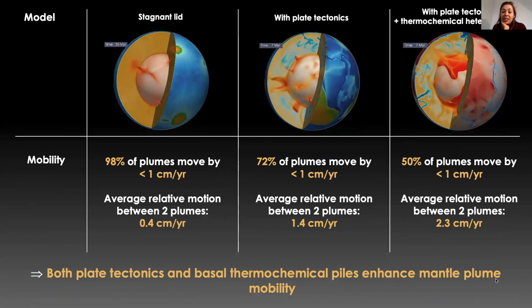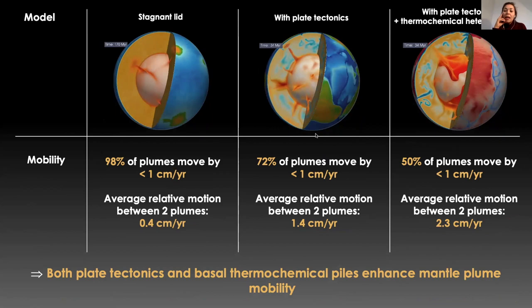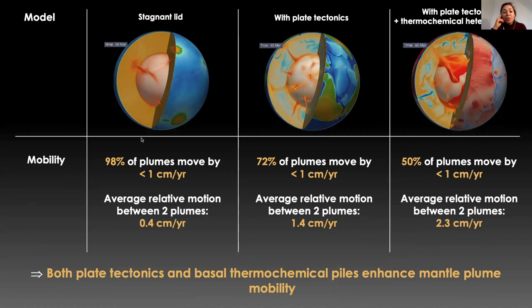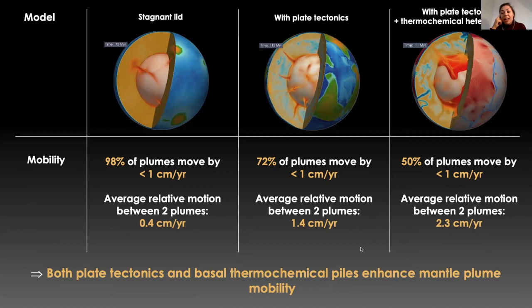By extracting plume absolute and relative motion, we showed that both plate tectonics and basal thermochemical piles enhanced plume mobility compared to stagnant lid. However, in all these cases, as you can see here with those numbers, plume motion stays reasonable, being less than a few centimeters per year on average in all cases.